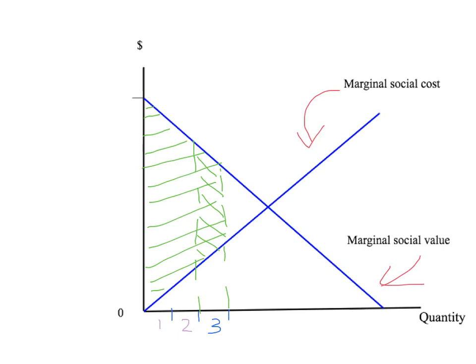Finally, if we produce too many units — way out where marginal social cost is above marginal social value — then we start creating negative social value. In other words, we start creating units that reduce social value rather than increasing social value.